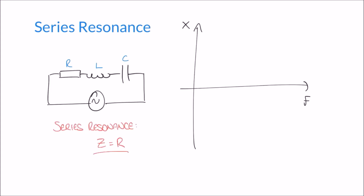At resonance, our impedance consists only of resistance, so Z equals R. To understand why, we have to remind ourselves how we calculate the reactance of these separate components. For an inductor, the formula for XL is 2π f L. Now, looking at a graph of frequency against reactance, 2π is a constant and the inductance of our inductor is also constant whatever value that is.